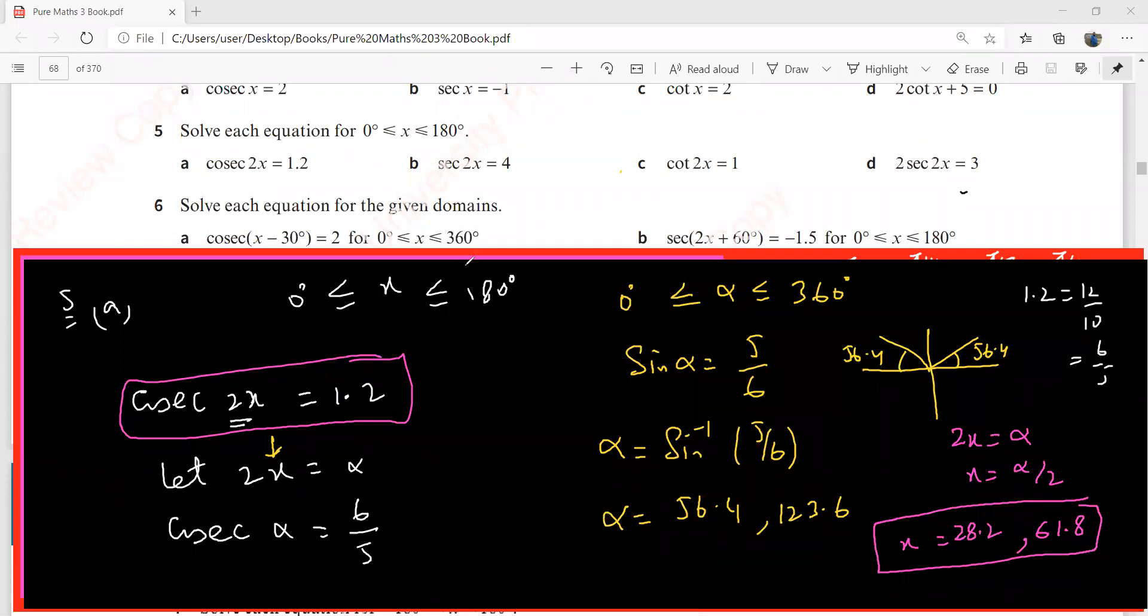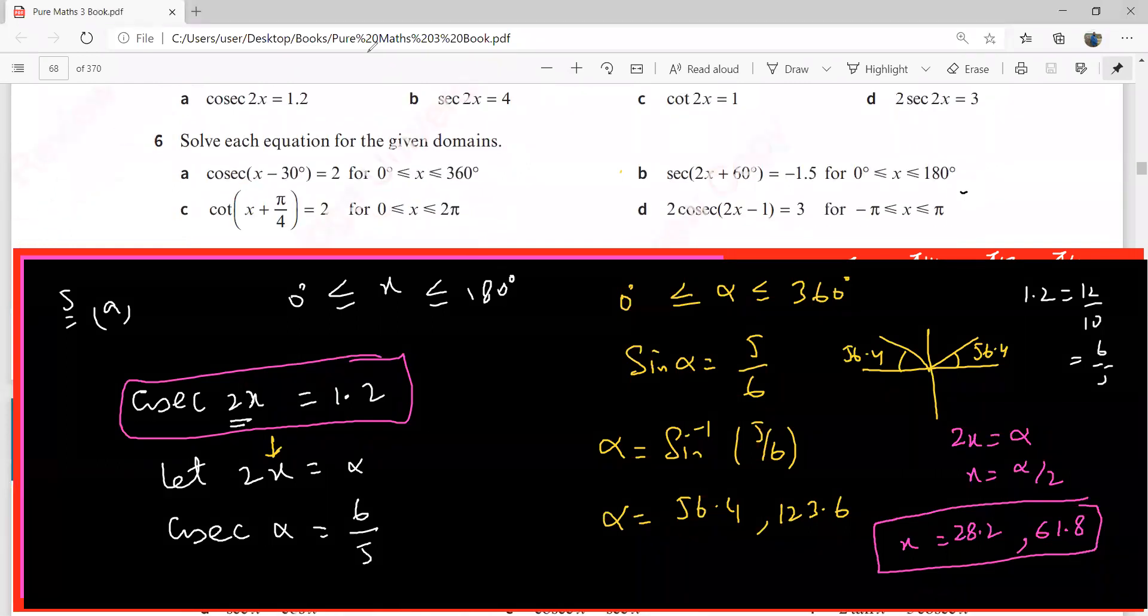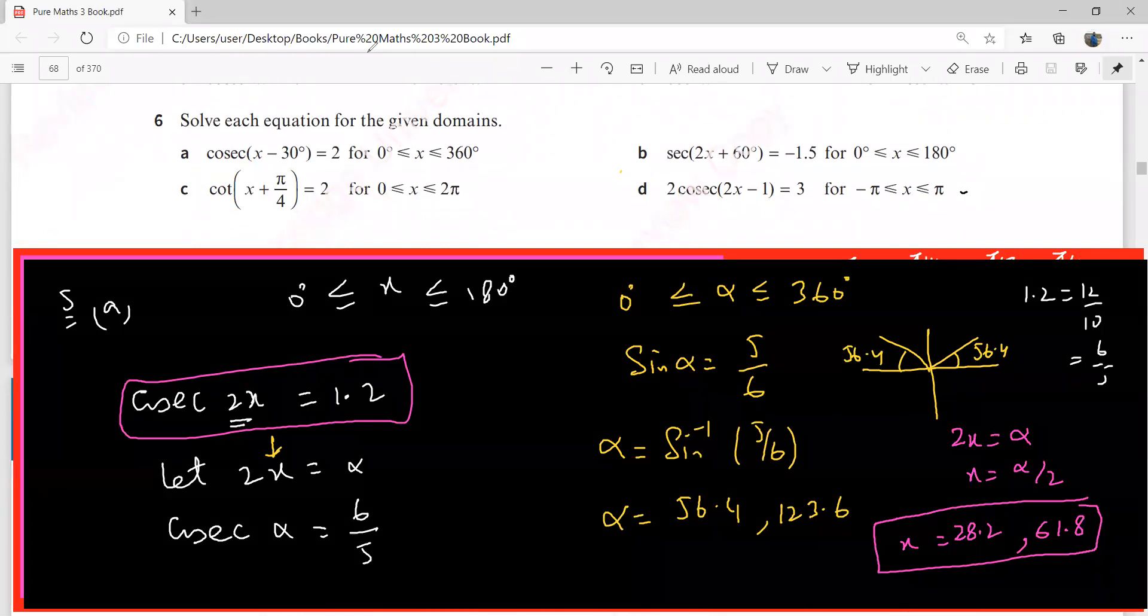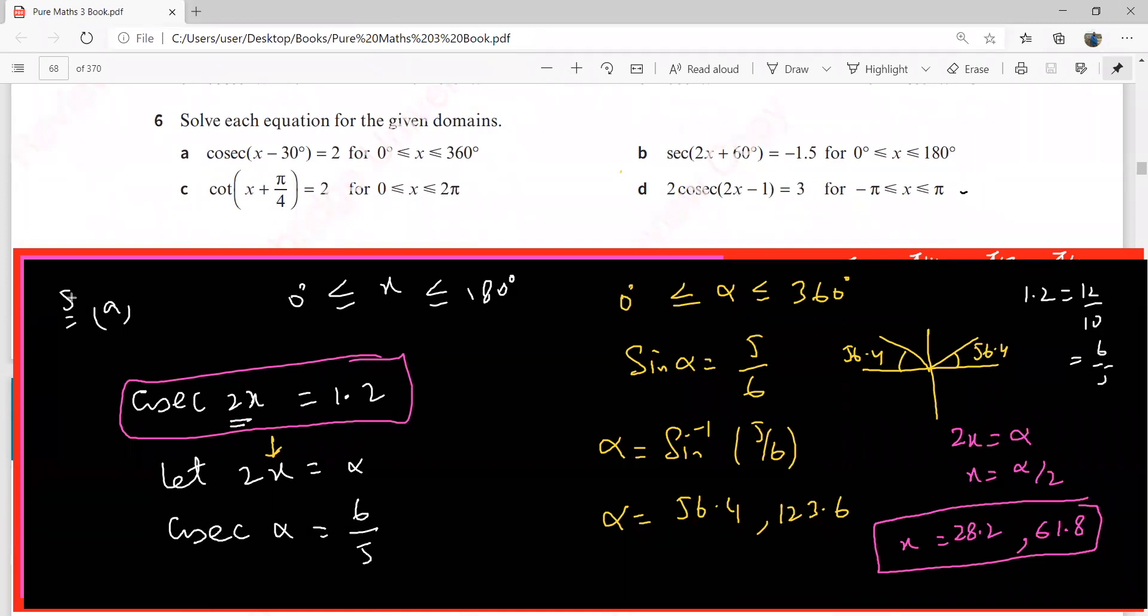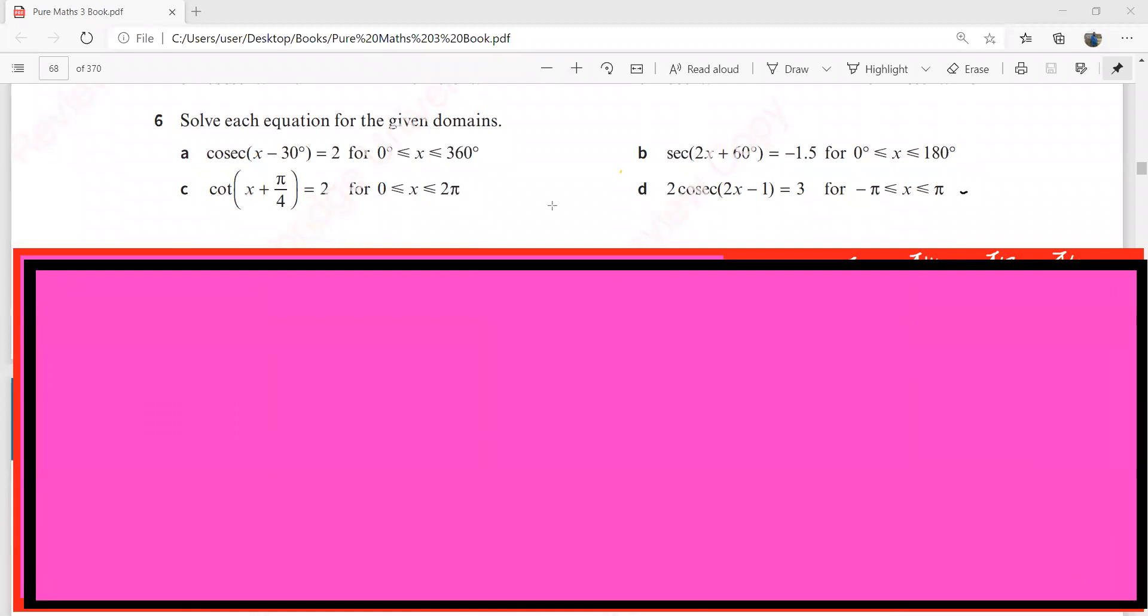You have to write your equation in terms of sine, cos, and tan, and your equation should have a simple angle. Let's try a question from the sixth question. Let's try the c part. Please change your calculator's mode into radians quickly.